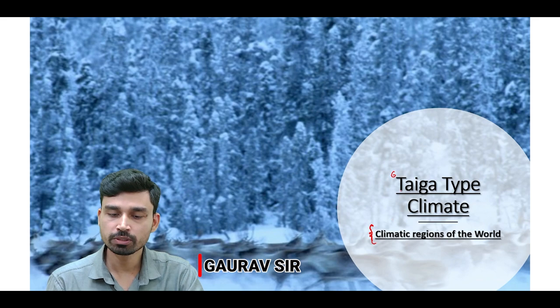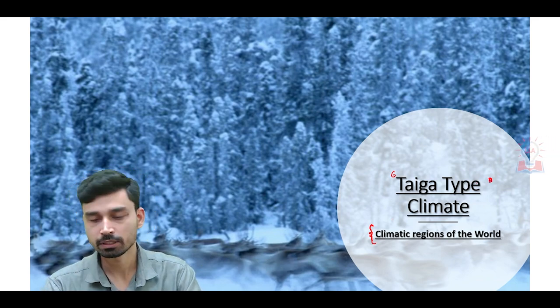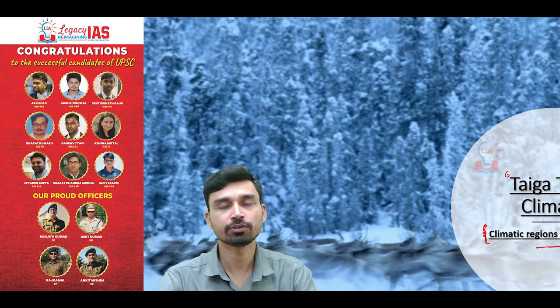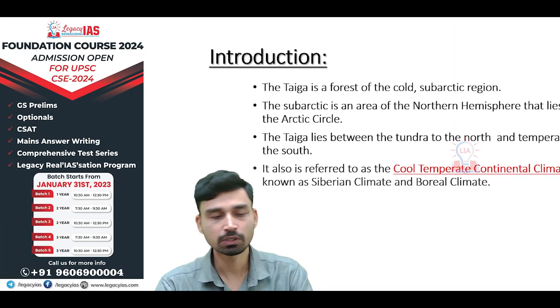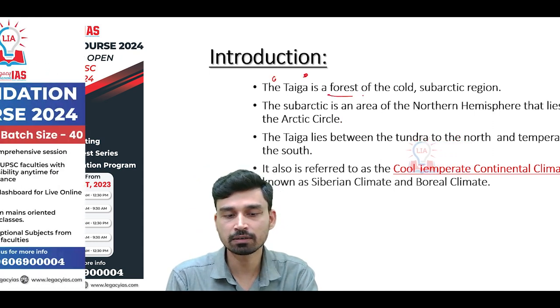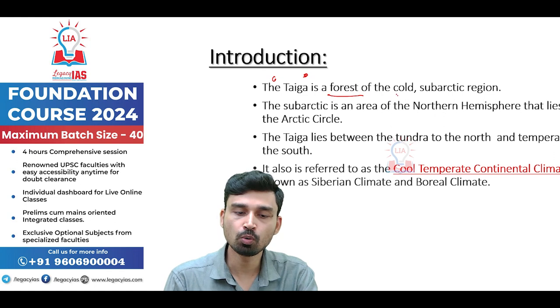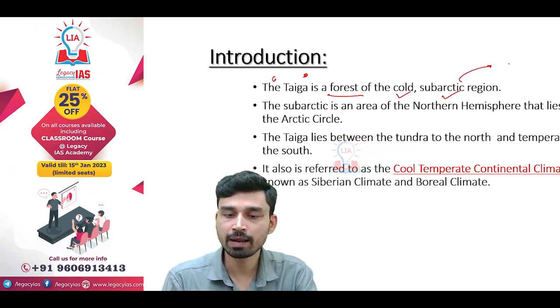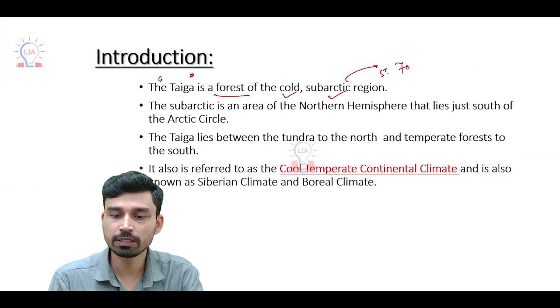Hello students, welcome. In today's video we are going to discuss the Taiga type of climate, which is also called the Boreal climate. This is part of our series on climatic regions of the world. The Taiga climate can be simply described as a forest region in the cold sub-arctic zone of the earth. Sub-arctic basically means that part of the earth lying between 50 to 70 degrees north latitude.